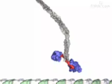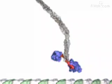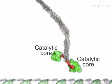The motor protein kinesin is a dimer with two identical motor heads. Each head consists of a catalytic core and a neck linker.